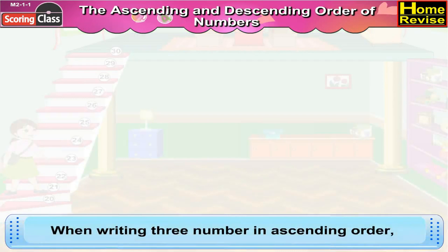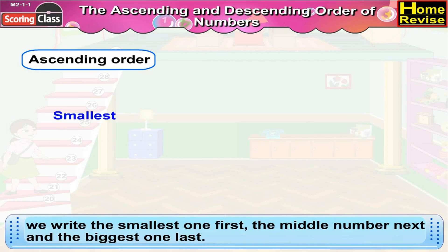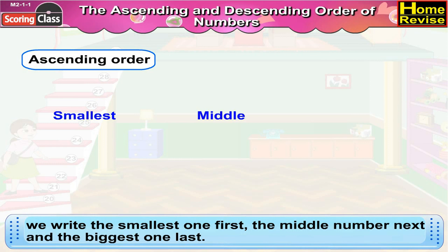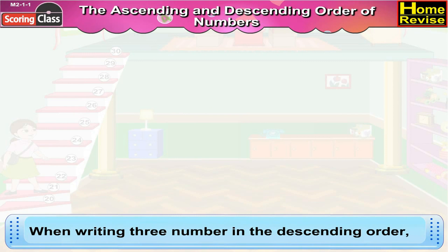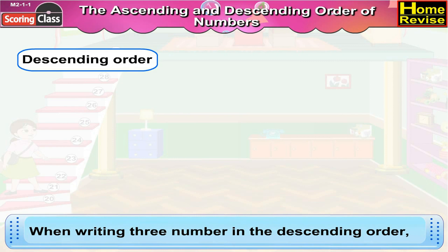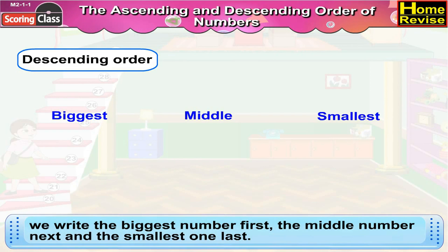When writing three numbers in ascending order, we write the smallest one first, the middle number next, and the biggest one last. When writing three numbers in descending order, we write the biggest number first, the middle number next, and the smallest one last.